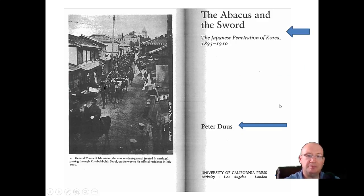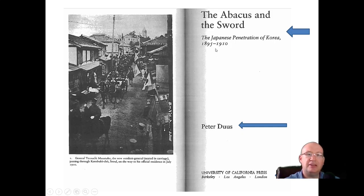For example, this is a book written by a man named Peter Deuce — his name is very easy to find. You'll notice the title is 'The Abacus and the Sword,' with the subtitle 'The Japanese Penetration of Korea, 1895 to 1910.' A lot of times with history texts you'll have title, colon, subtitle, comma, years.